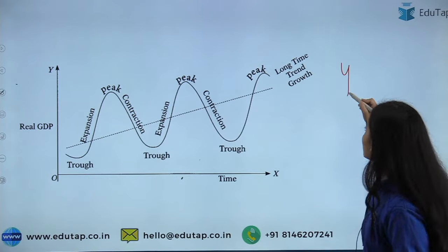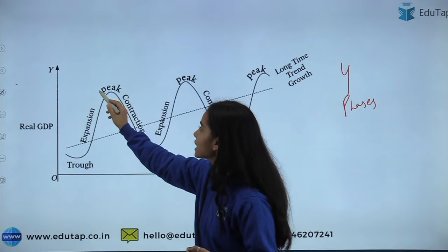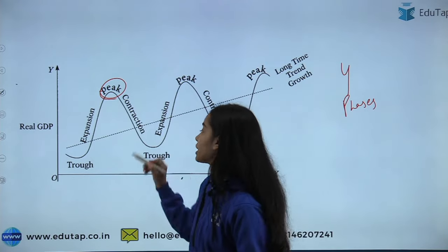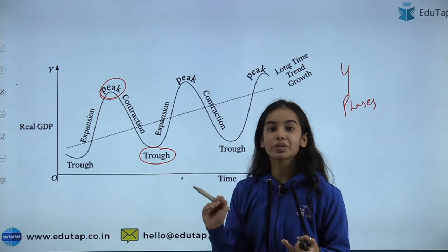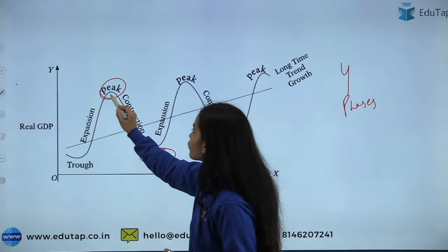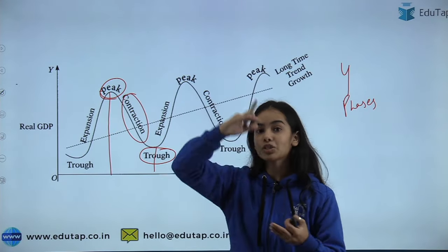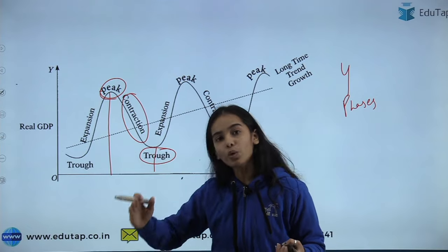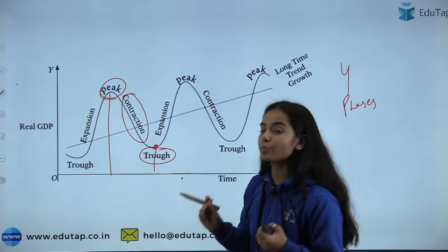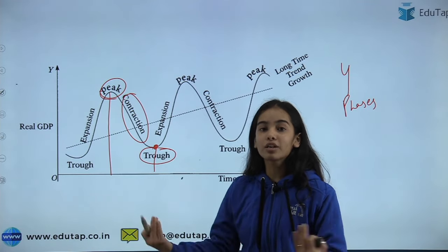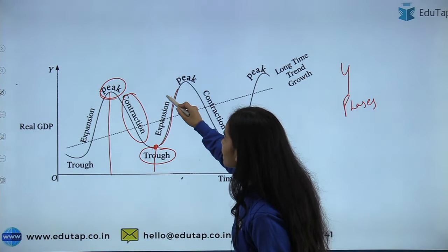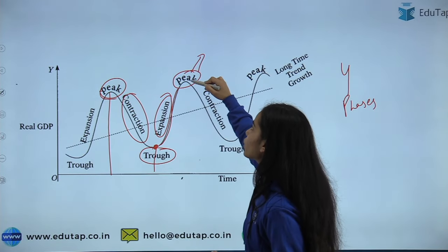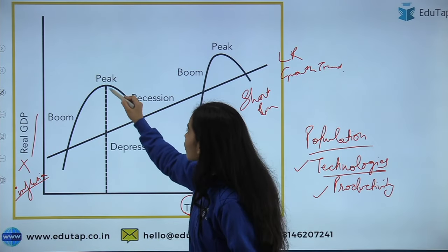We divide the business cycle into four phases. The first is the peak — the highest real GDP attainable in the short run. The lowest real GDP we can reach in the short run is the trough. From the peak to the trough comes the contraction — when we reach the highest GDP we cannot go above it, so we go down. We reach the lowest point and cannot go below it, so external forces help us expand. We then reach the expansion phase, keep expanding, and reach the peak again.